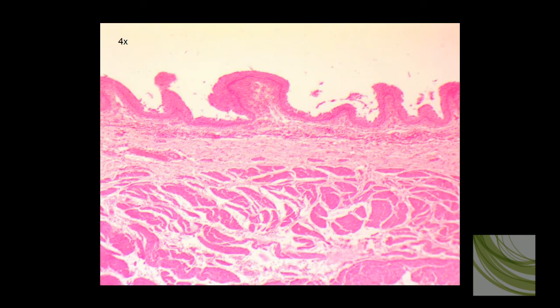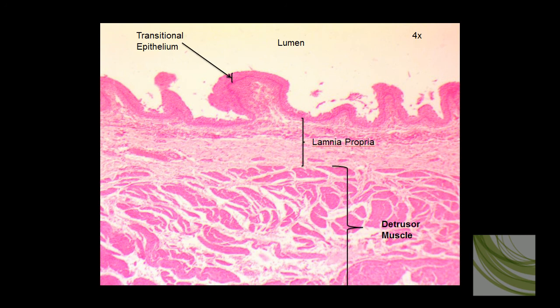Here is our second slide of transitional epithelial tissue, and we can see a lot of different tissues here. This is another urinary bladder, and we're using the 4X objective. We can see the band of transitional epithelium. The dark line is the basement membrane. There's the lamina propria. Then we get down into the detrusor muscles and the lumen. Remember, epithelial tissue is always found on the edge of a tissue.